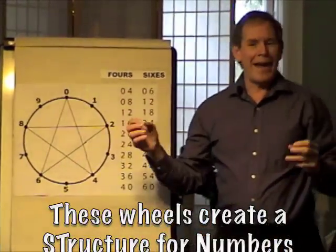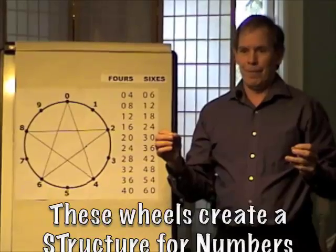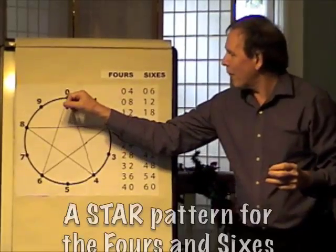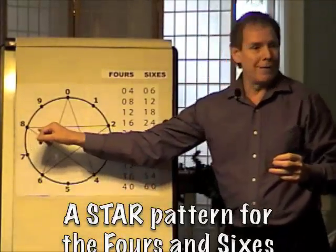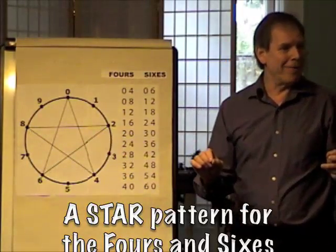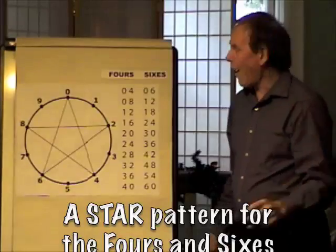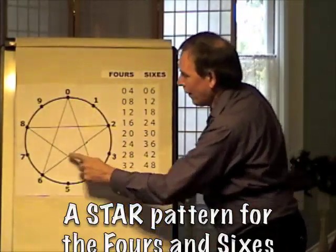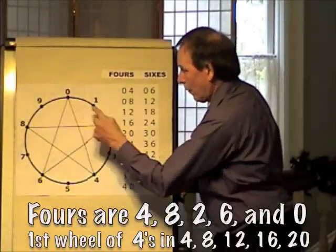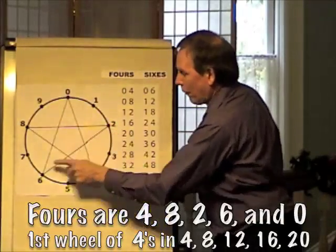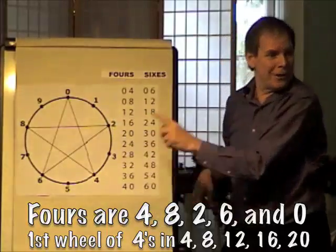Now, here's the 4s and the 6s. They use the same 5 numbers: 0, 2, 4, 6, 8, but a different pattern. So this one creates a star. You go to 4, 8, 2, 6, 0, or 4, 8, 12, 16, 20. You can continue doing that.